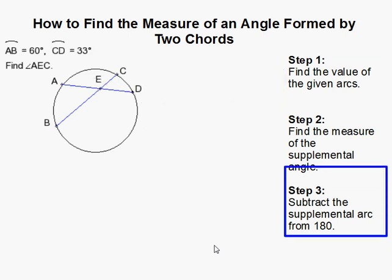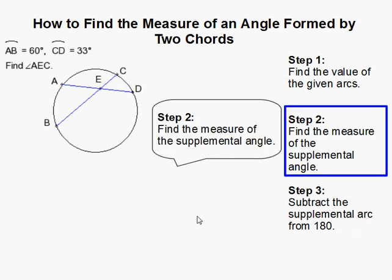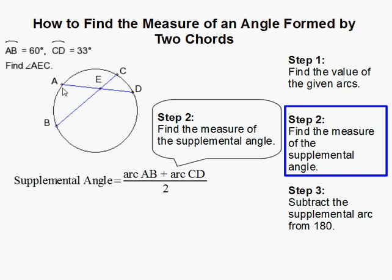So we first have to find the measure of the supplemental angle — that is this angle here. Because with these given arcs, we can easily find this angle, and once we know this angle, it's easy to find the one we're looking for.